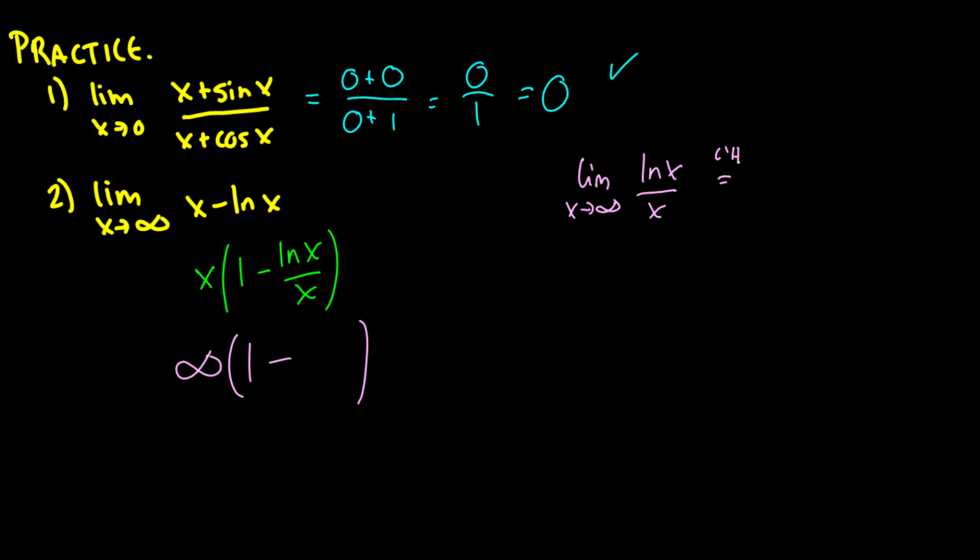Let's take the limit as x goes to infinity of ln(x) over x. This is 1/x divided by 1, which is 1/x, and when you plug infinity in, you get 0. So this is infinity times (1 - 0), which is infinity times 1,